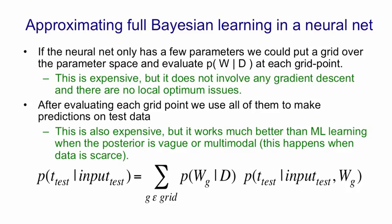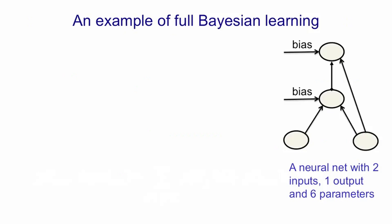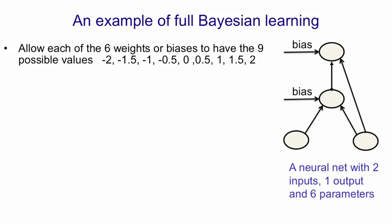So here's a picture of full Bayesian learning. We have a little net here that has four weights and two biases. If we allowed nine possible values for each of those weights and biases, there'd be nine to the six grid points in the parameter space. It's a big number, but we can cope with it.